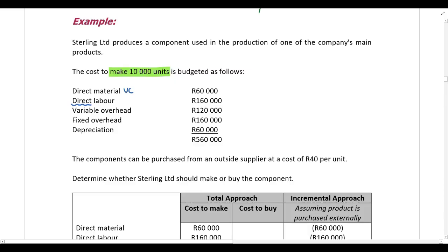Direct labor is a direct cost and therefore also a variable cost — it can always be traced to a specific product. Variable overheads are obviously variable, fixed overheads are obviously fixed, and depreciation, unless told otherwise, should be assumed to be straight-line depreciation, which means it is also a fixed cost.